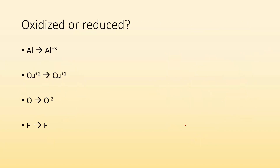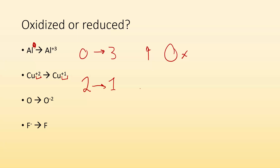Let's do a little practice — has this been oxidized or reduced? We have Al with no charge written, so it's zero. It went from Al⁰ to Al³⁺. The charge went up, which tells me it's oxidation. Here I have Cu²⁺, and then it changed to become Cu⁺ — from two to one, it became less positive, so the charge went down, which tells me it's reduction.